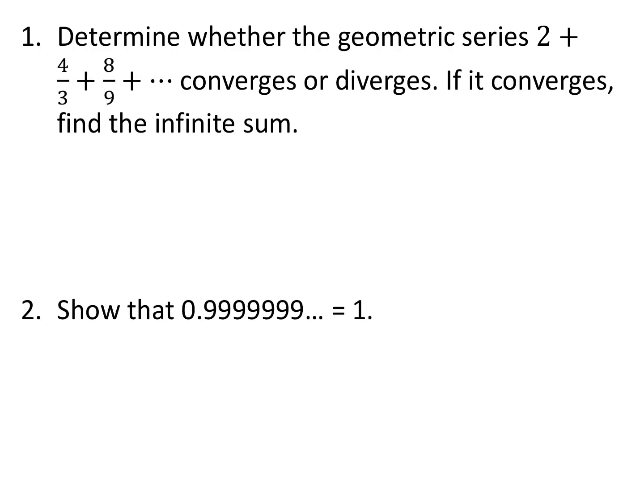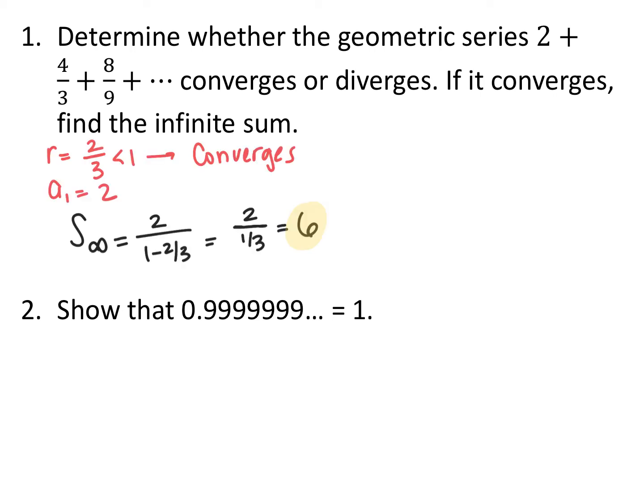Looking at the series 2 + 4/3 + 8/9 on forever — decide whether it converges or diverges, and if it converges, find the infinite sum. The common ratio is 2/3: to get from 2 to 4/3, and 4/3 to 8/9, we multiply by 2/3 every time. Since 2/3 is between negative 1 and 1, it converges. Using the infinite sum formula with first term 2 and common ratio 2/3: 2 ÷ (1 − 2/3) = 2 ÷ (1/3) = 6. So if you continue adding these terms forever, the sum gets infinitely close to 6.